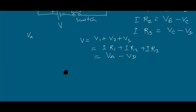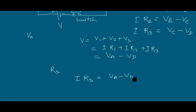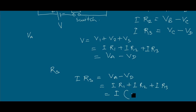If the equivalent resistance of resistors R1, R2, and R3 in series is RS, then the total potential drop can be written as I × RS = VA − VD. This can also be written as IR1 + IR2 + IR3, which equals I × (R1 + R2 + R3).